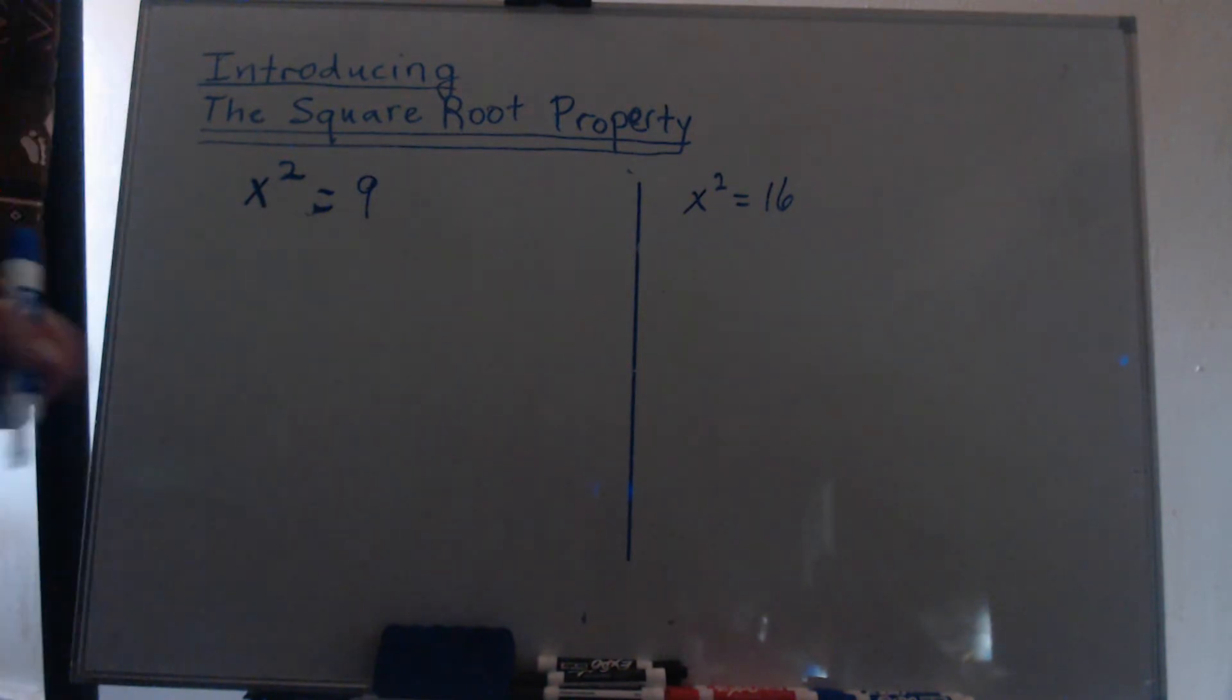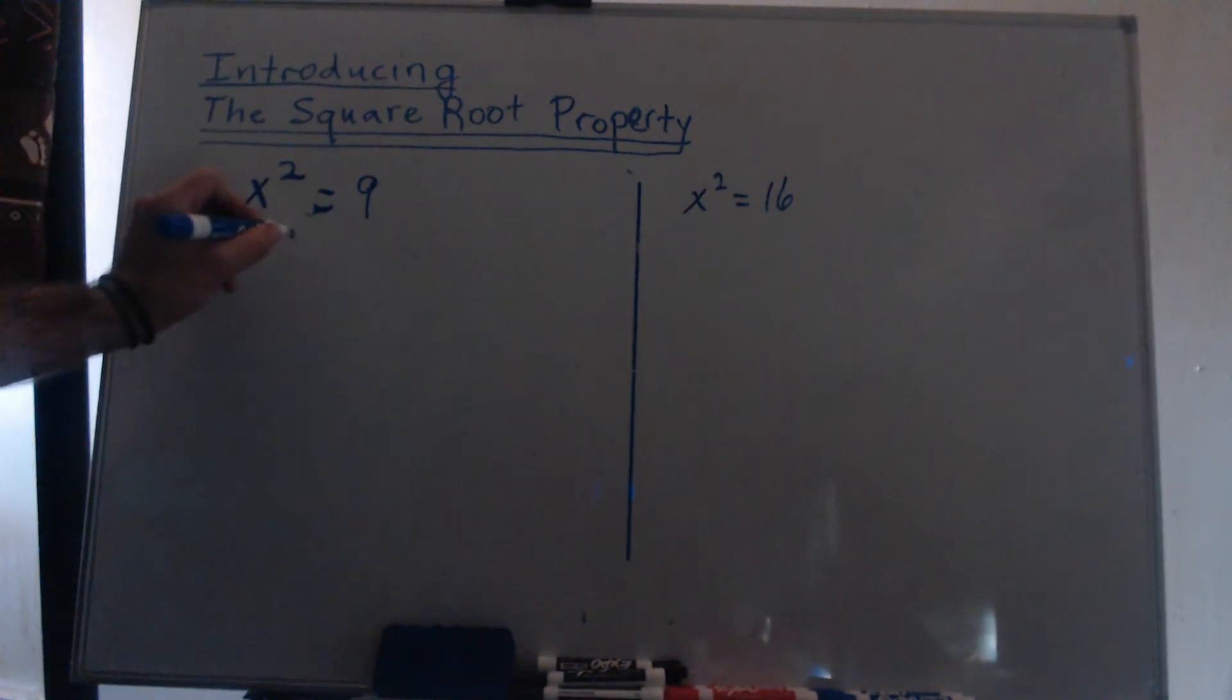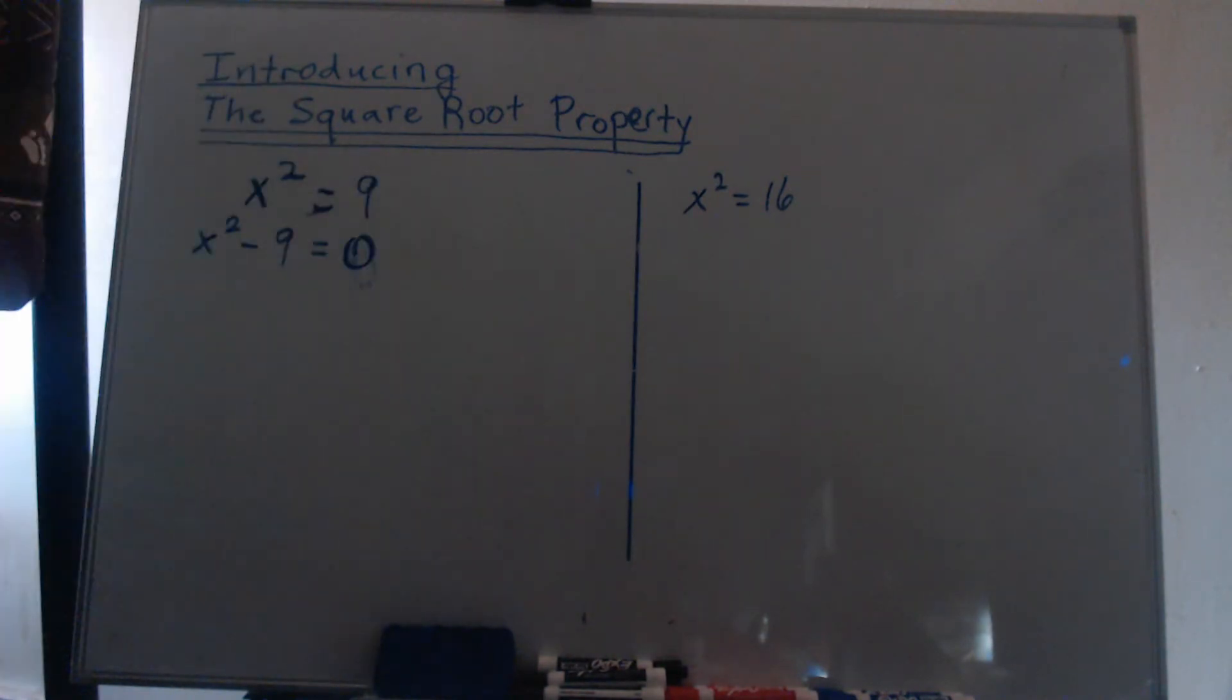Then in each of these, we would have to subtract in order to get zero on one side, and a quadratic expression in descending order. So we've got the standard form of a quadratic equation on the right side.